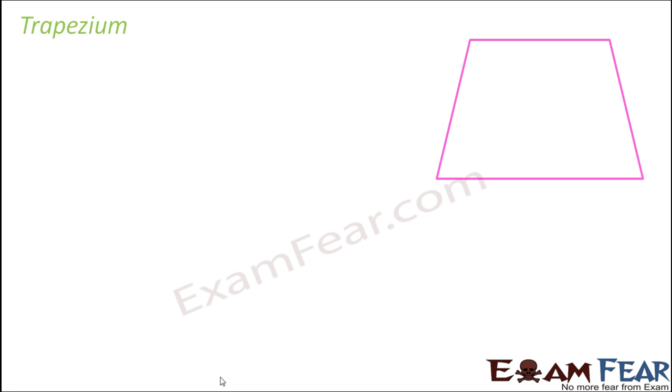Finally the last quadrilateral, that is trapezium. So what is a trapezium? The specialty of trapezium is that here one pair of opposite sides are parallel. Please make a note of it that one pair of sides are parallel, not both the pairs.